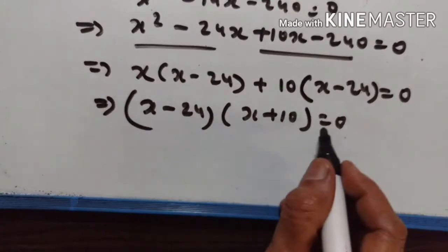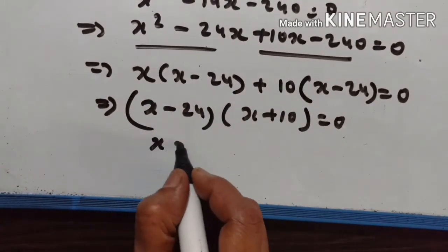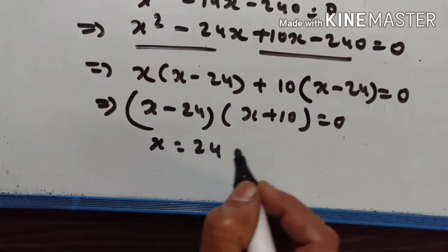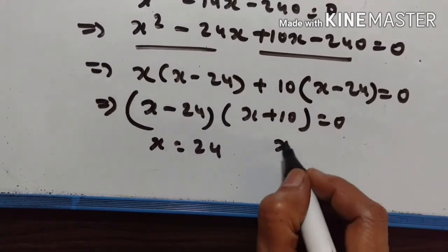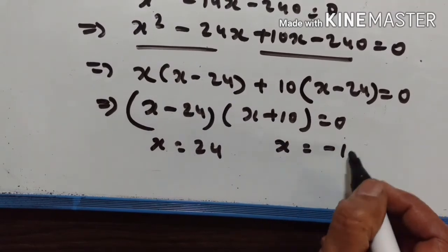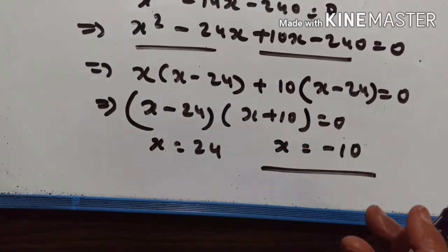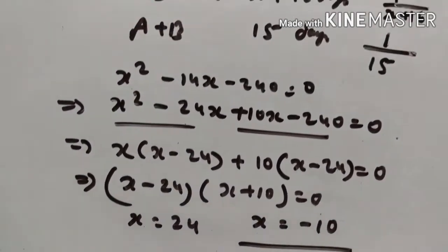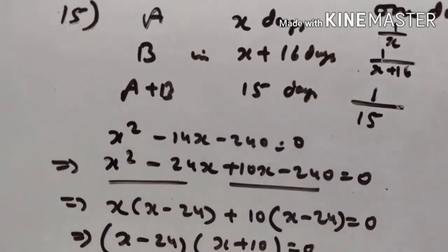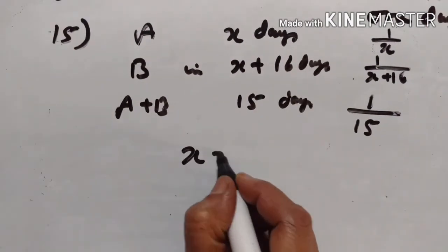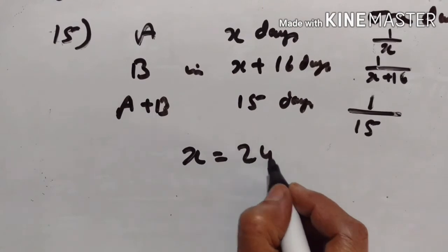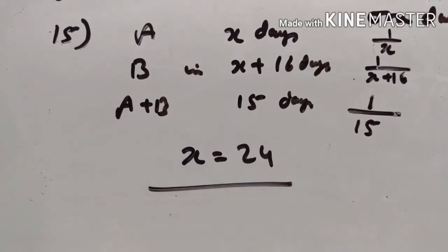If x minus 24 equals zero, then x equals 24. If x plus 10 equals zero, then x equals minus 10, which cannot be a negative number. So x equals 24 is the answer.